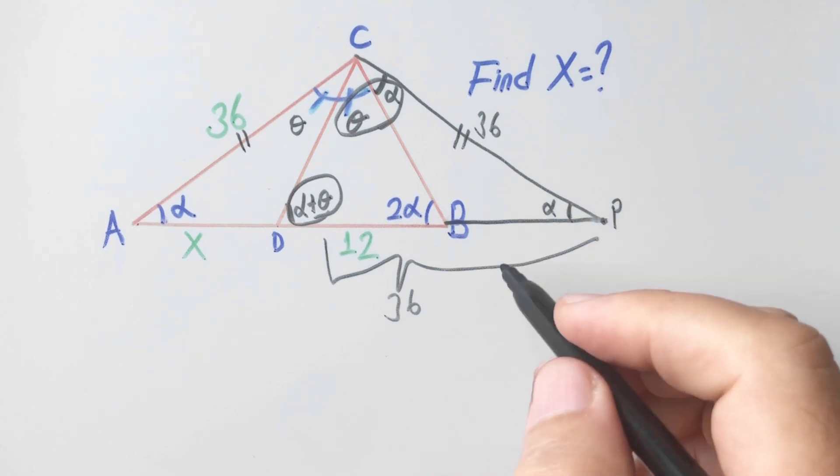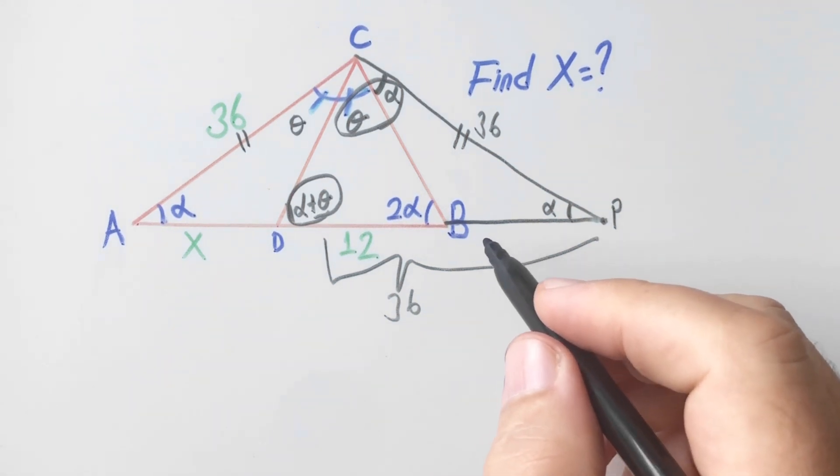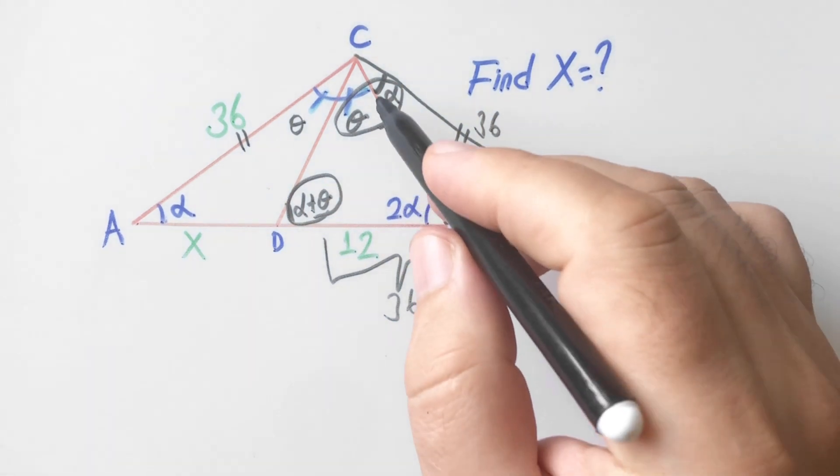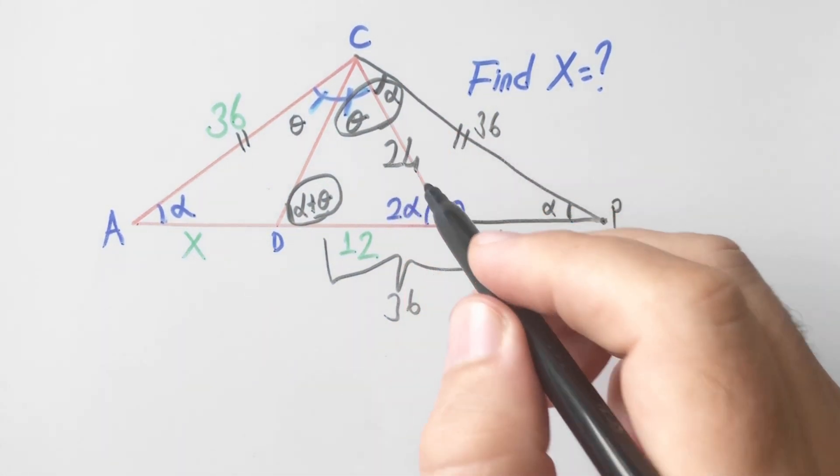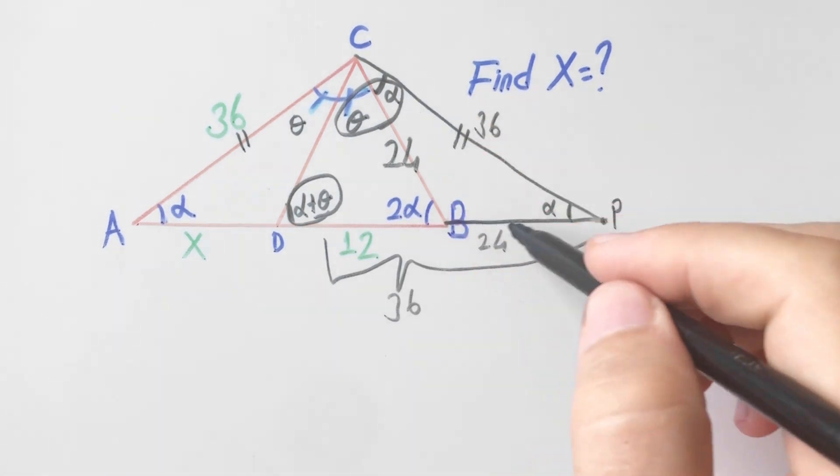Like 36, 36, so 24 units left here. Here is 24 right, because this triangle is as this triangle.